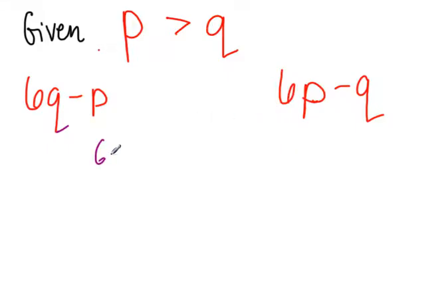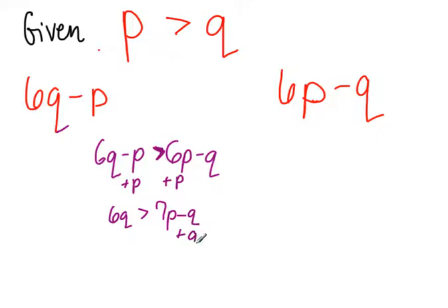I'm going to say that 6Q minus P is larger than 6P minus Q. Now, that might not be what you have, and that might not be the answer, but I want to show you what happens sometimes if you don't get the answer out. So if I do this and I go ahead and put like terms together, I would add P and add P. So I get 6Q is larger than 7P minus Q. Then I would add Q to both sides and get 7Q is larger than 7P.